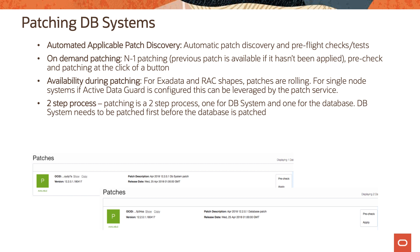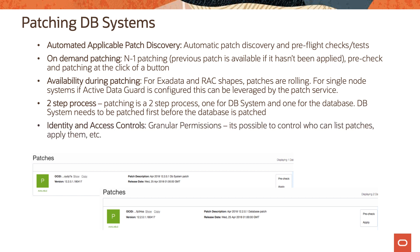In the case of Exadata and VM rack shapes, patches are applied in a rolling fashion. However, for single-node DB systems, if Active Data Guard is configured, this can be leveraged by the patch service; otherwise you will have a downtime for single-node DB systems when applying a patch. Patching is a two-step process: you first patch the DB system and then you patch the database. The screenshot at the bottom of the slide shows how you can run pre-check and apply patches in the OCI console.